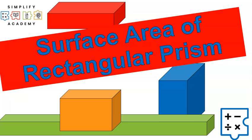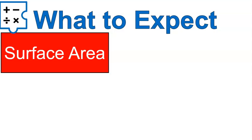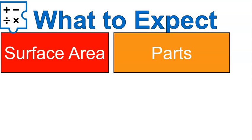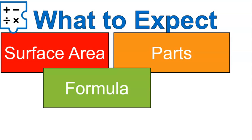Hello, this is Mr. Buffington from Simplify Academy, and we are looking at the surface area of rectangular prisms in this lesson. We're going to talk about what surface area is, the parts of a rectangular prism, and then a formula that might make our life a little bit easier, even though the formula may look complex. Let's walk through it and see if you like the formula better or trying to figure out the parts separately. Let's do it.